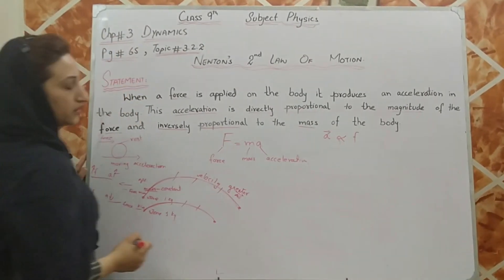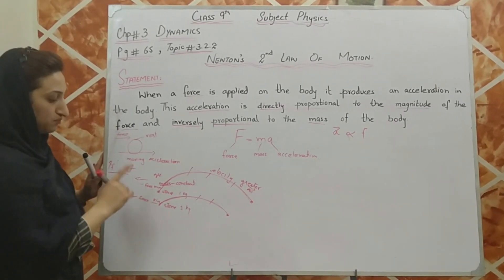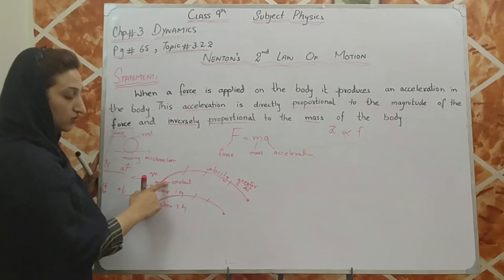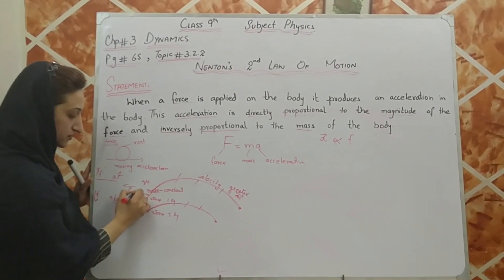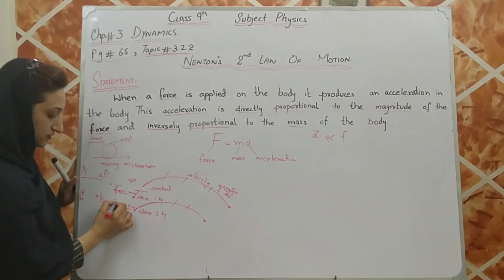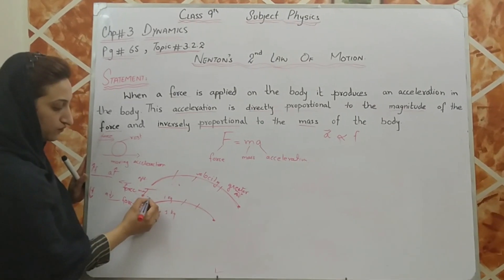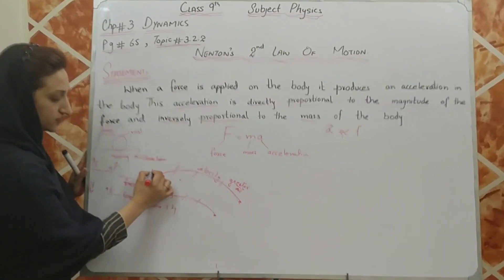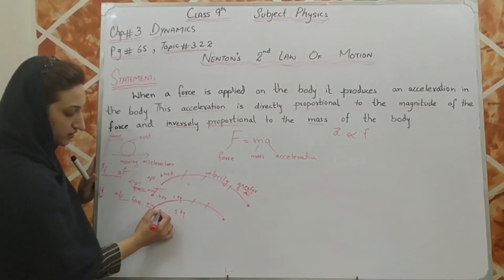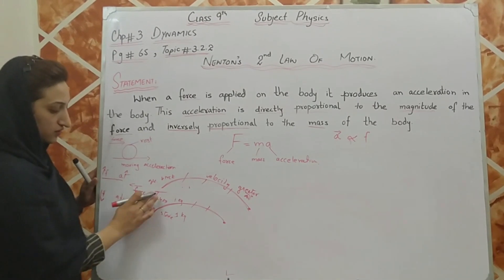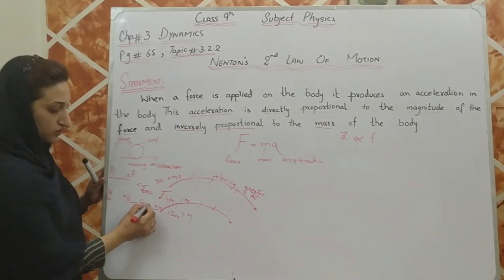This example justifies the second line of the statement. Now, acceleration is inversely proportional to the mass of the body. To show this, I take the same example but now force is kept constant while mass is different. Here I have a brick of 4 kg, and here a stone of 1 kg, but the force is the same in both cases.